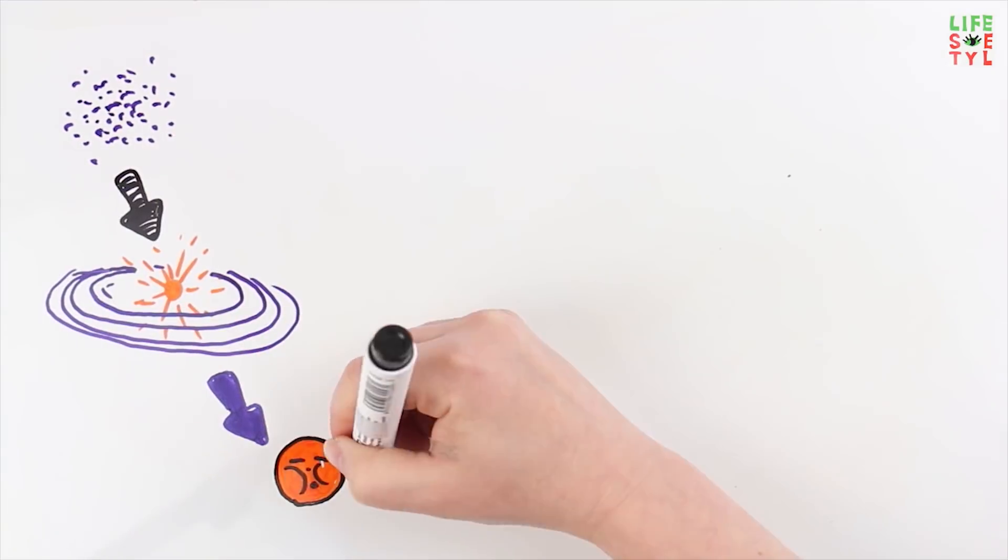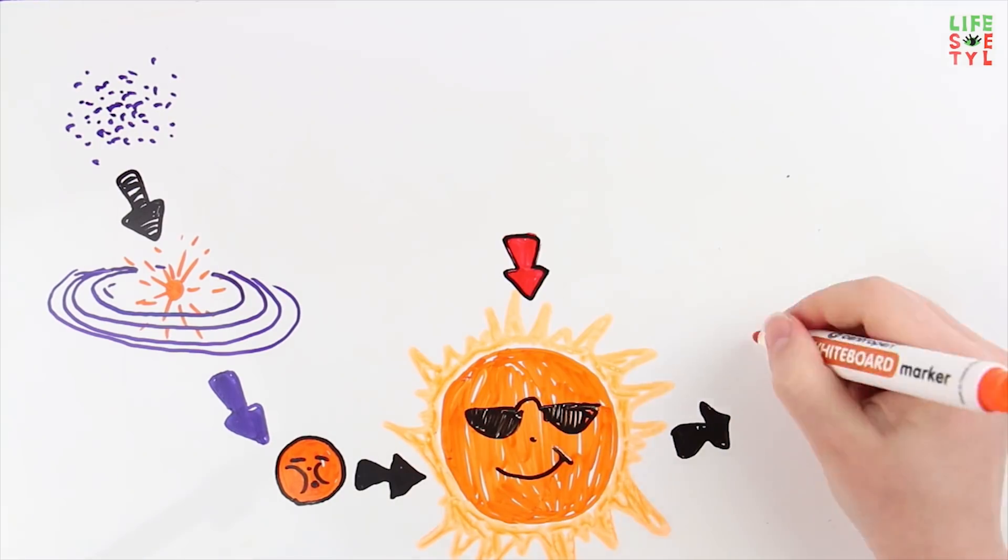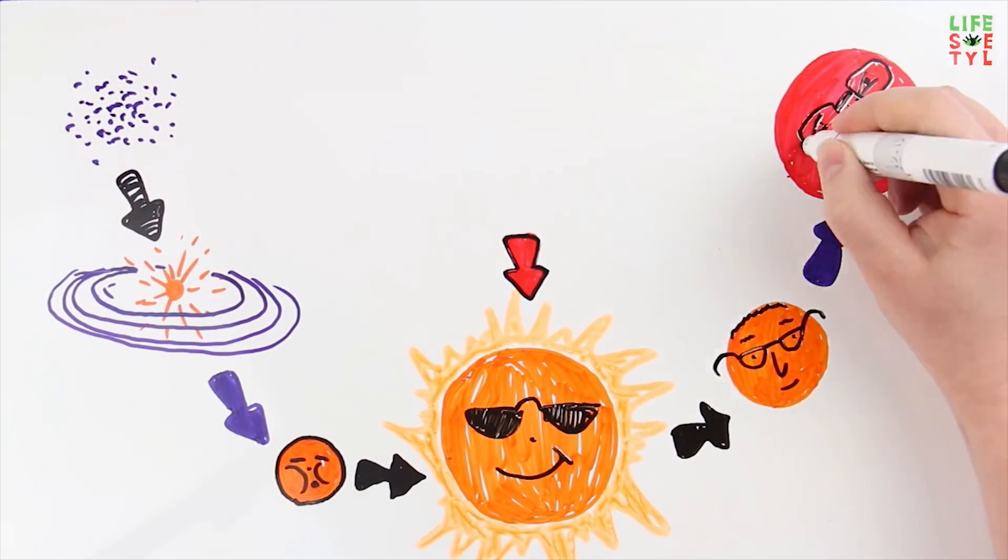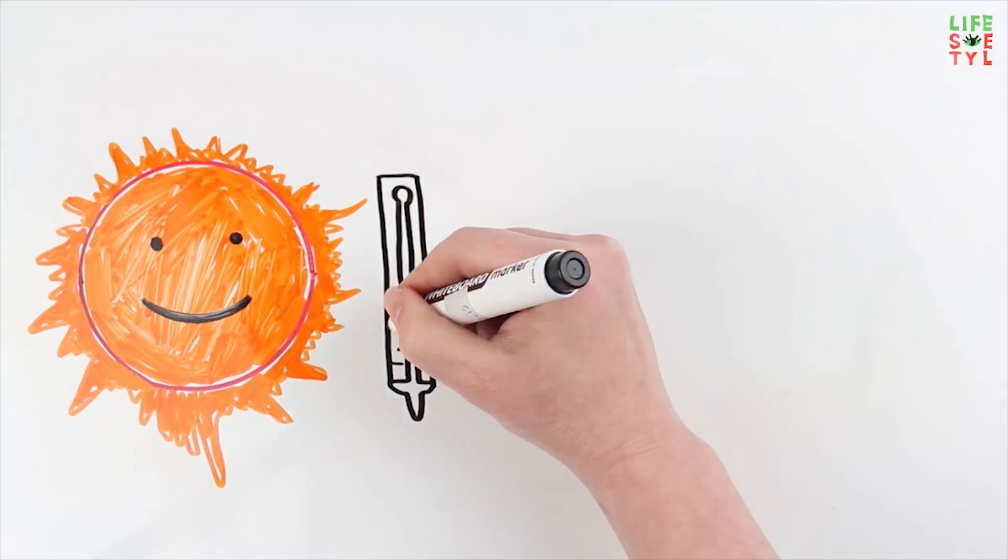Our sun is quite young, it's about 4.5 billion years old, and that's about half the cycle of a star like that, so it will keep shining for billions of years.